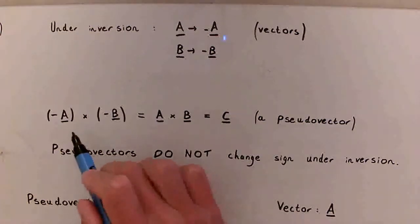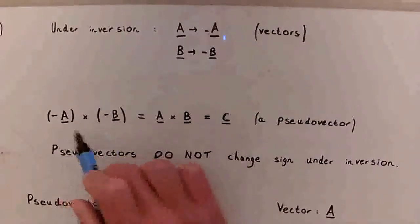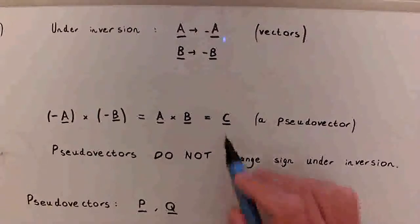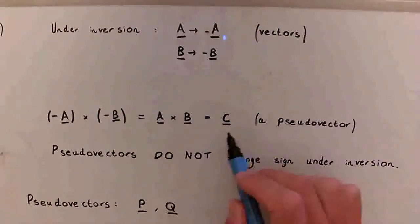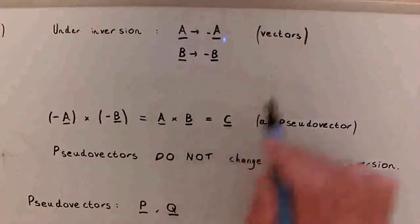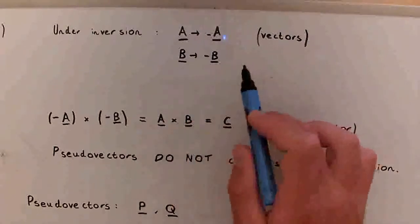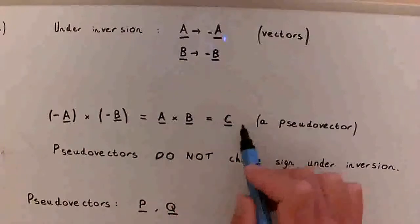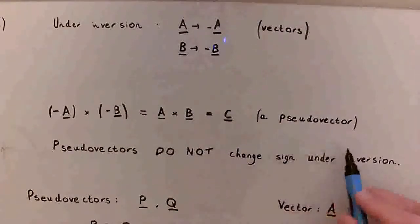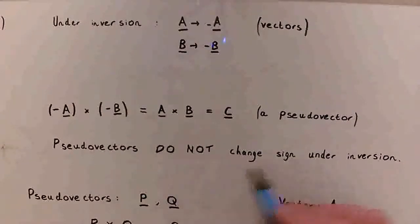In a similar way to ordinary multiplication where minus signs cancel out, minus A cross minus B equals A cross B. So the result C doesn't change its sign even if we have an inversion of coordinates. We showed that vector A becomes minus A and vector B becomes minus B under an inversion, but their cross product C doesn't change its sign. This defines a quantity called a pseudovector, where even if we flip all the axes and perform an inversion, a pseudovector will not change its sign.